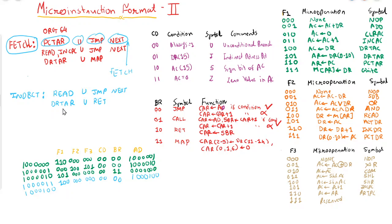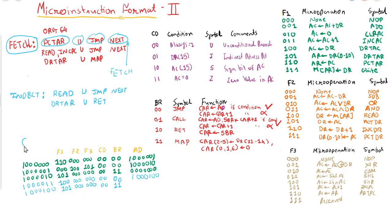The next operation is DR2AR, which belongs to field 1 with value 1 0 1. There is no operation from field 2 or field 3. The condition is unconditional jump. After finding the effective address of the operand, control is transferred back to normal execution.